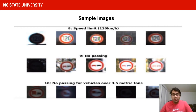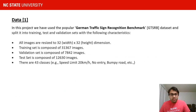Traditional computer vision algorithms require a significant amount of effort to handcraft important features in the images. Also, they are not really scalable when it comes to handling new images. So we are looking to build a more automated approach for traffic sign classification, and that is when we decided to go with a deep learning based approach.